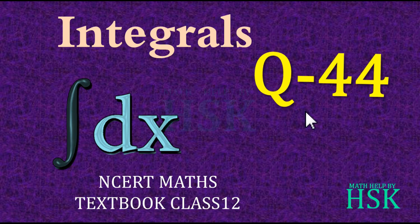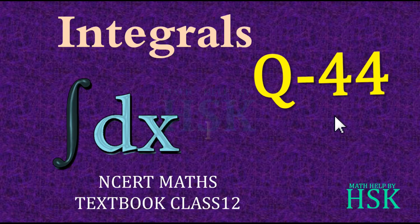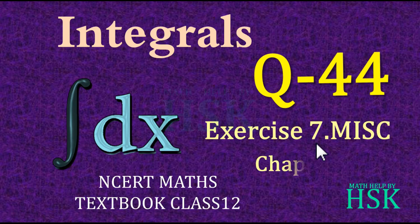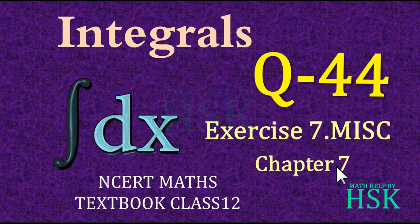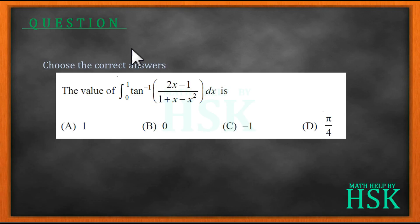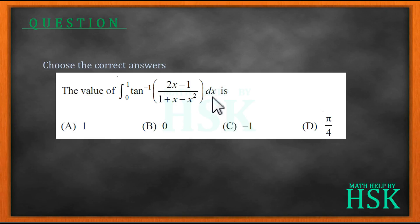Hello friends. In this video I am going to take question number 44 of exercise 7, that is the Miscellaneous exercise of chapter 7, Integrals. The question is: choose the correct answer. The value of the definite integral of tan⁻¹(2x-1)/(1+x-x²) dx from the limit 0 to 1 is which of the following options?